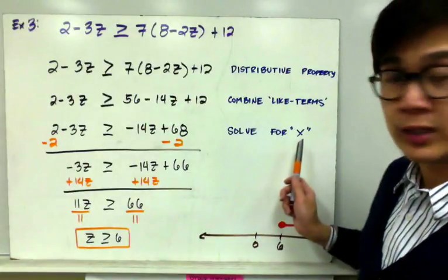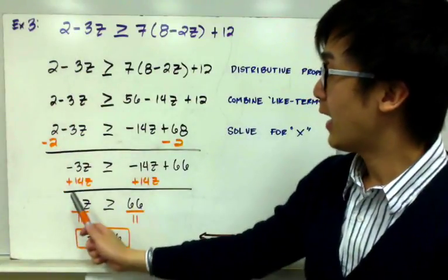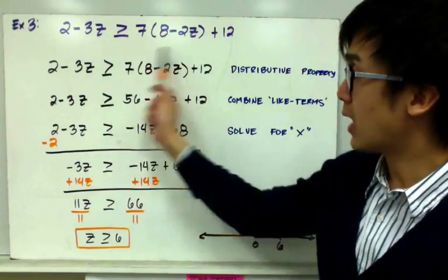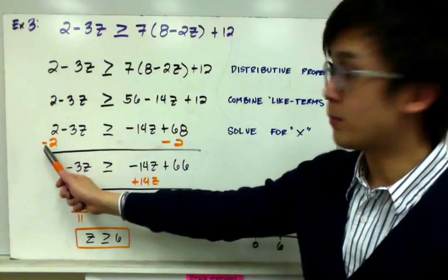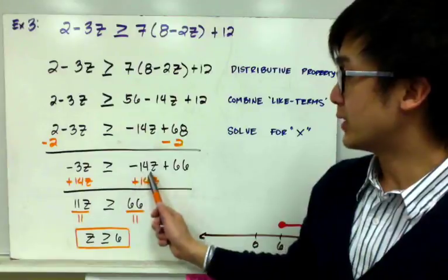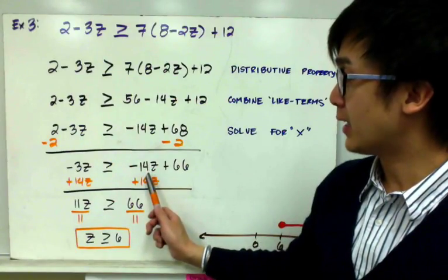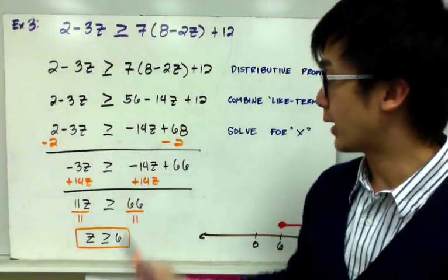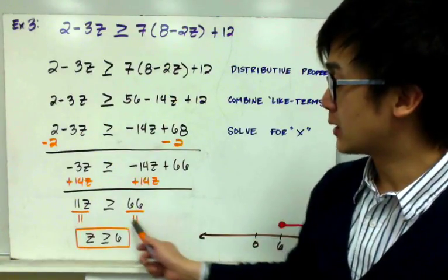Now we need to get the variable z on the left-hand side and constants on the right. First, subtract 2 on both sides to get negative 3z greater than or equal to negative 14z plus 66. Then add 14z on both sides so all z terms are on one side, giving us 11z greater than or equal to 66. Divide both sides by 11 to get z by itself.